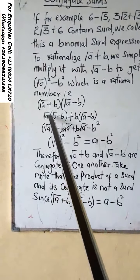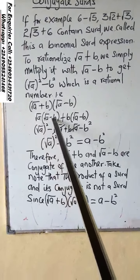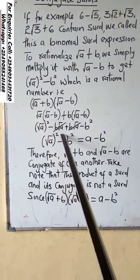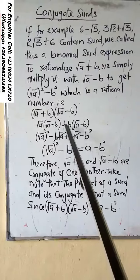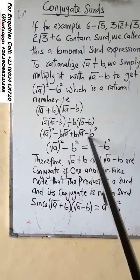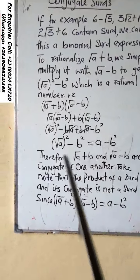So it will be root a times root a equals root a squared, root a times minus b equals minus b root a, plus b times root a, b times b minus b minus b squared. These two are similar, they will cancel. So what we have is root a squared minus b squared.